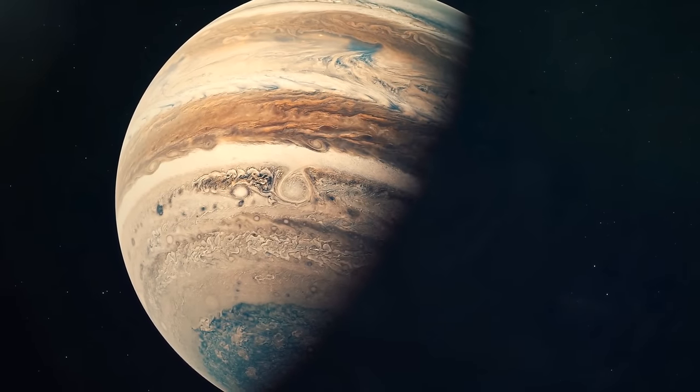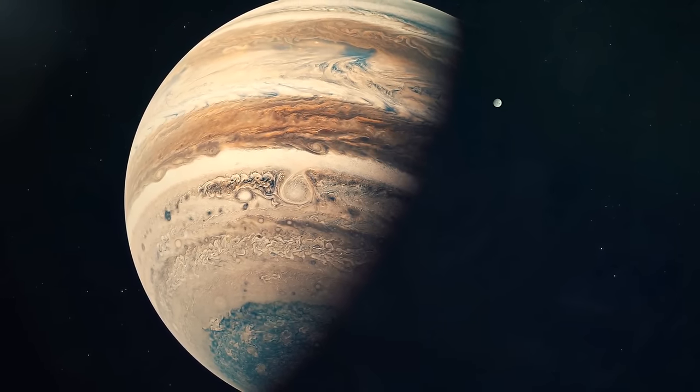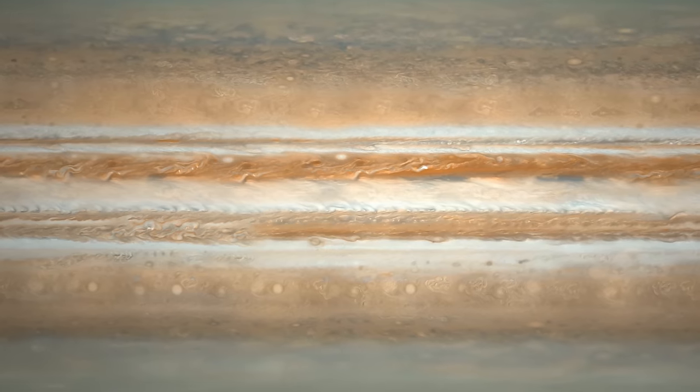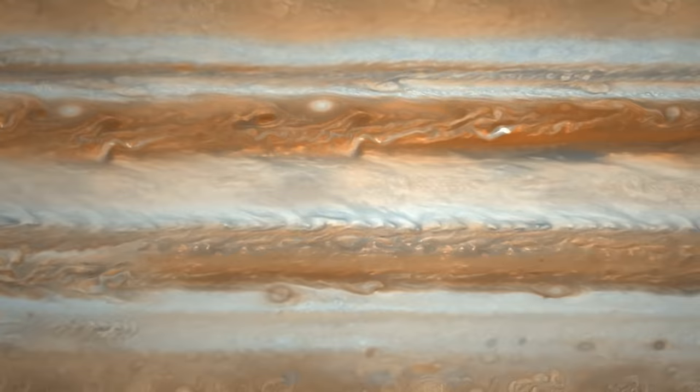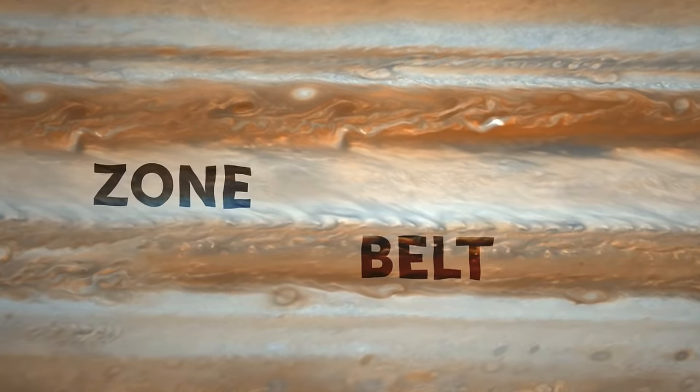Jupiter has these interesting patterns of dark and light clouds that go around the planet in alternating bands like giant stripes. These dark stripes are called belts, and lighter ones are called zones.